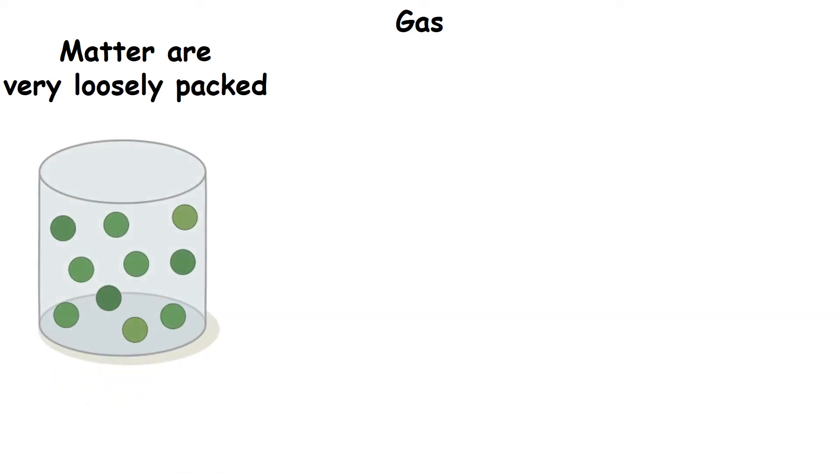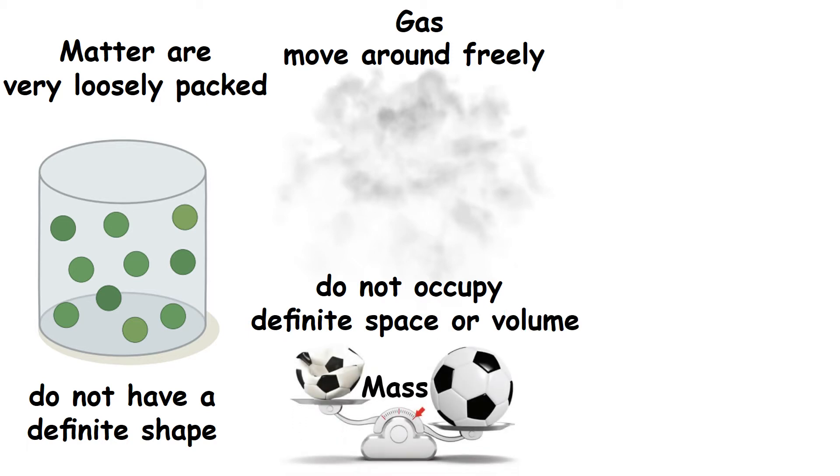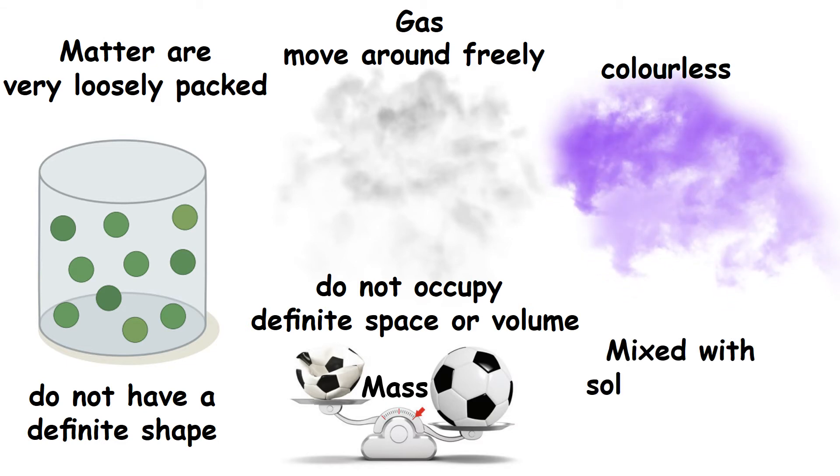Gases. The matter in gases are very loosely packed. They can move around freely in all directions. Gases do not have a definite shape and do not occupy a definite space or volume but they have mass. Most of the gases are colorless but when they are mixed with solid particles, they show distinct colors.